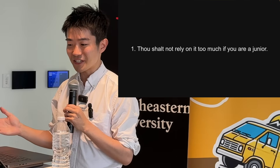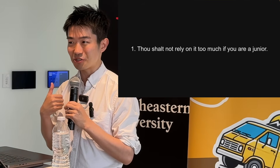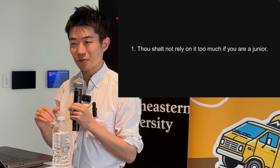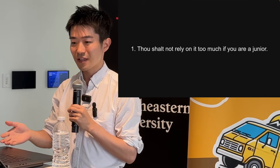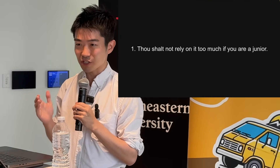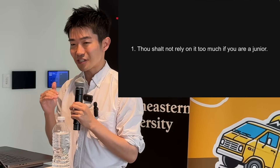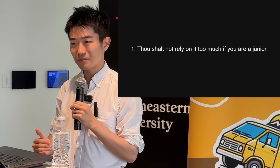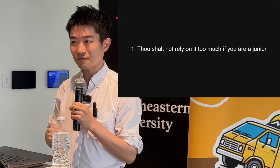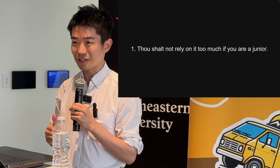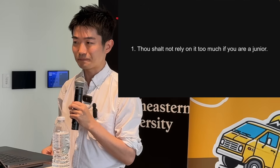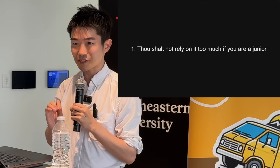Number one: you don't want to rely on AI too much if you're a junior. If you're more of a junior person, it's easy to make big mistakes — architectural mistakes. Not necessarily implementation mistakes, because AI will take care of a lot of those, but more fundamental mistakes at the beginning of the project or whatever task you're working on. So it's important to use it slightly differently.